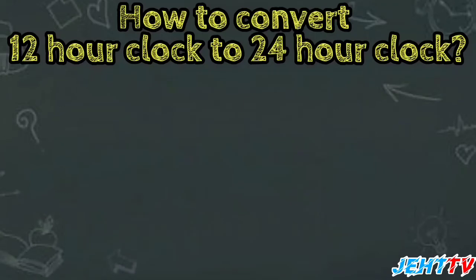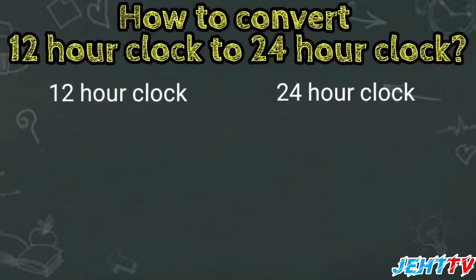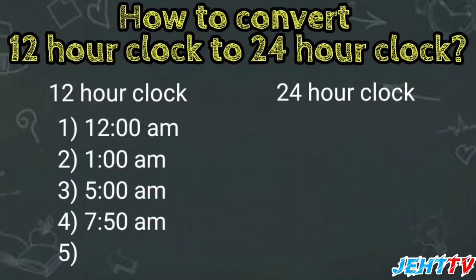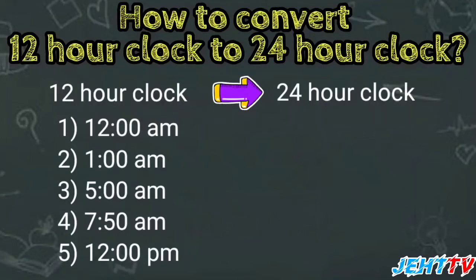All right, after you have watched the video, now I will teach you how to convert the 12-hour clock to the 24-hour clock system. Let's look at some examples here. In the 12-hour clock, there are five questions: 12 AM, 1 AM, 5 AM, 7:50 AM, and 12 PM.